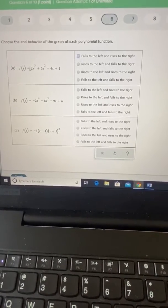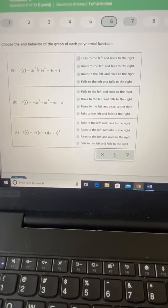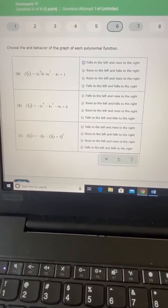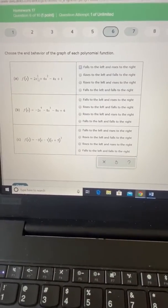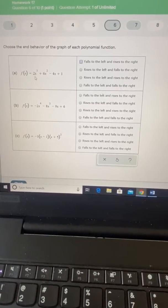We can see our leading coefficient is positive and our degree is odd. That's all we really need to know. Remember, any time you have odd degree, you're going to be rising in one corner and falling in the other corner, and which corner is determined by the sign on the leading coefficient.